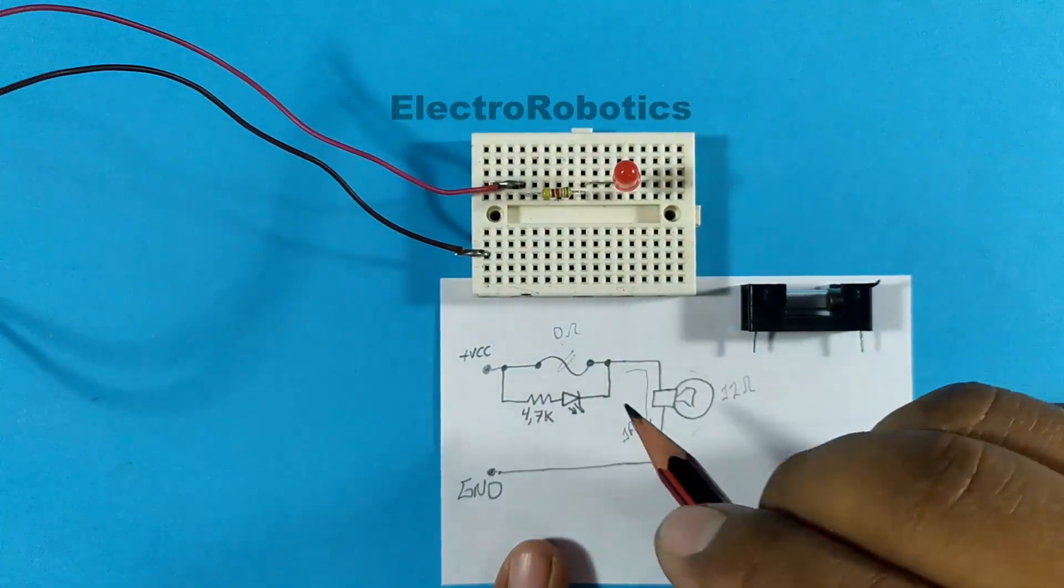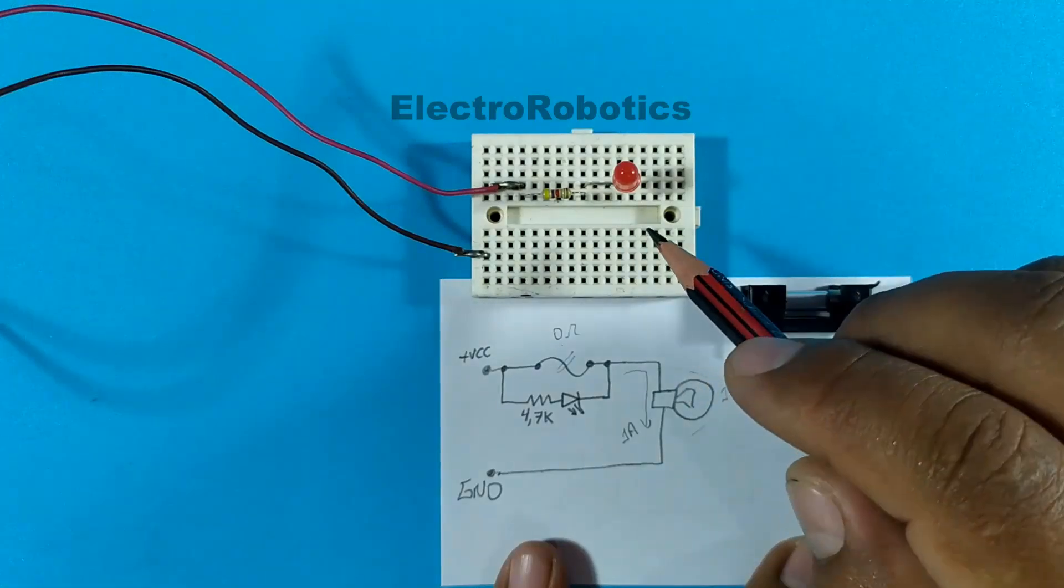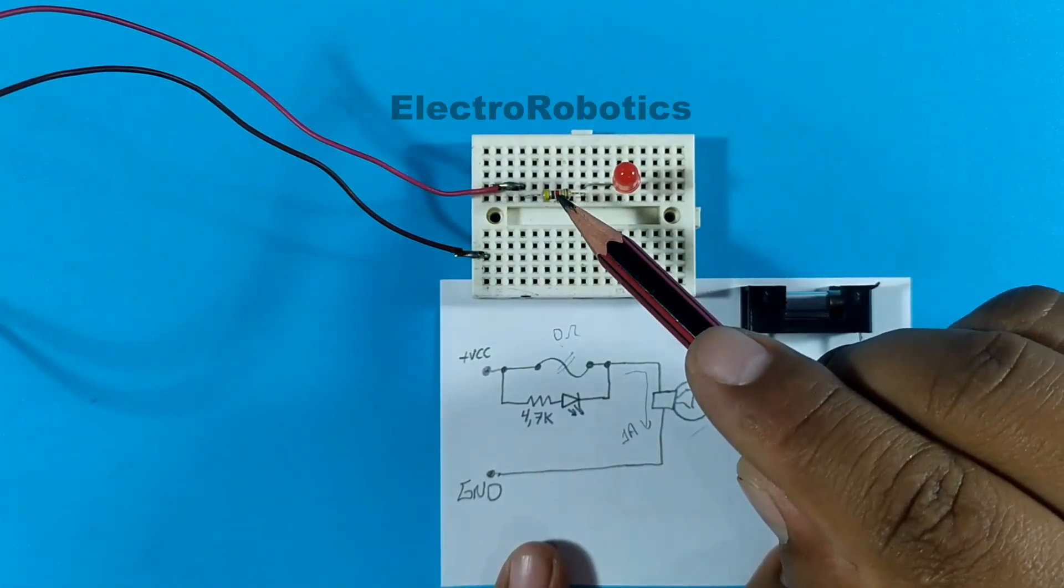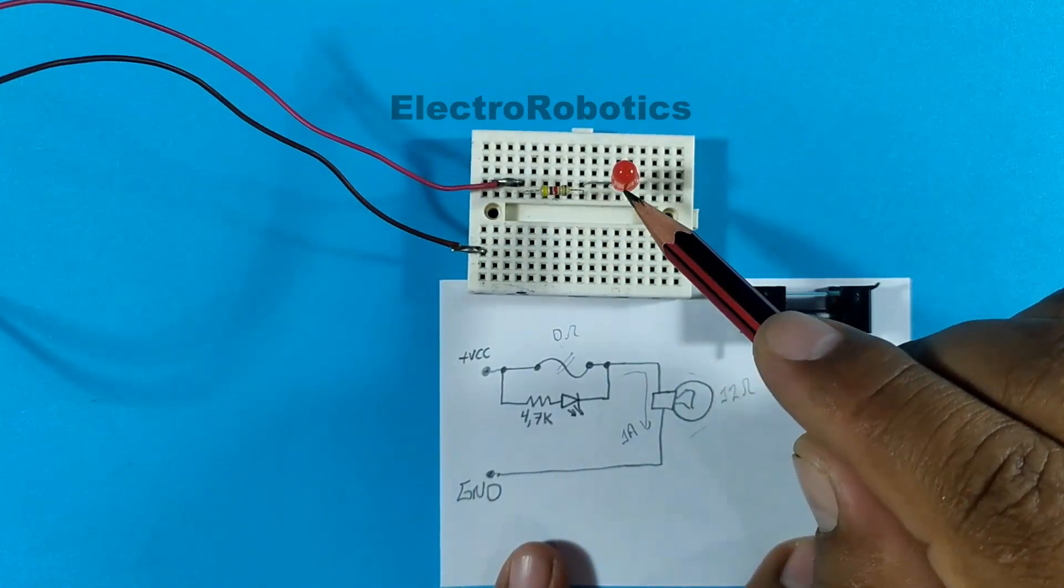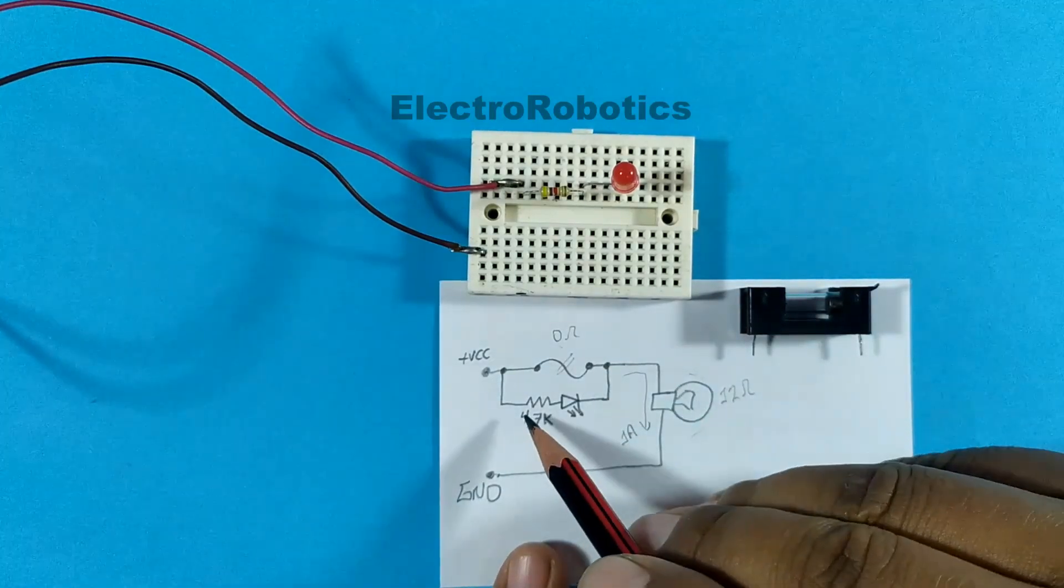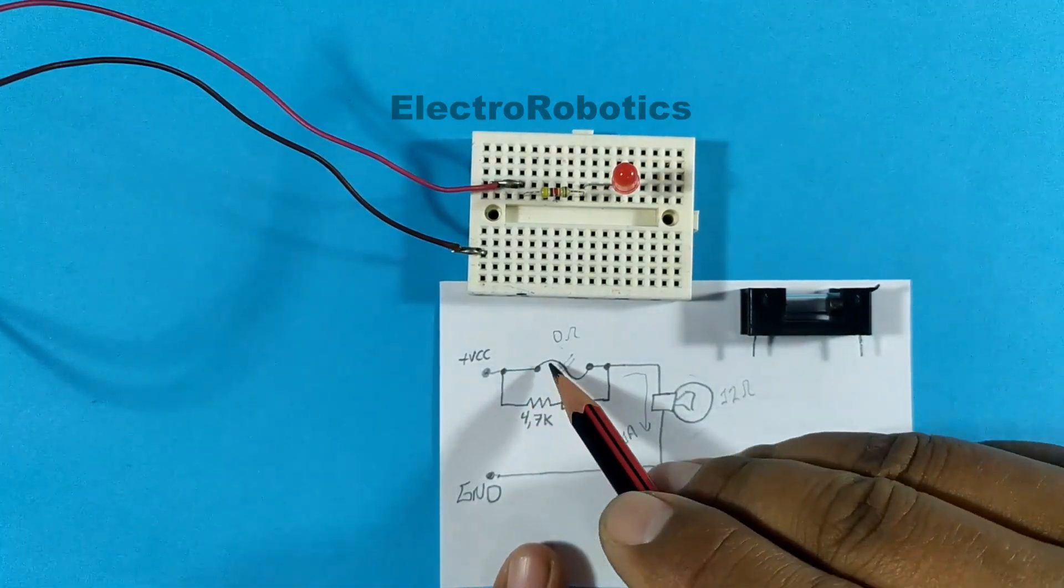Here we have the circuit of how all the electronic components should be connected. We have a resistor of 4.7 kOhms and a common LED. They are connected in parallel to our fuse.